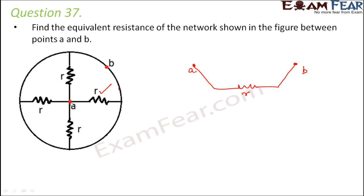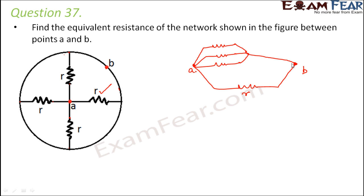There are three resistances which start from point A — that means one end of all three resistances is connected to A. The other ends of those three resistances meet each other and then meet point B. So basically all of them are meeting each other and then meeting point B. This is the simplified version of the circuit.